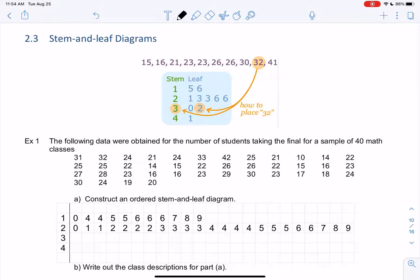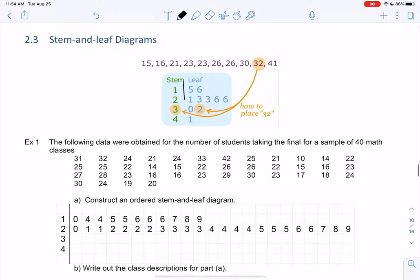Alright, we have one more type of graph we're going to look at in chapter two, and they're called stem-and-leaf diagrams. So instead of doing number lines and bars and scales, we just organize the list into this thing called a stem and a leaf.